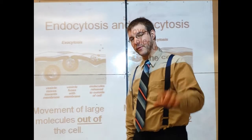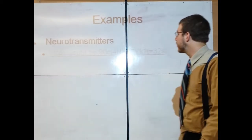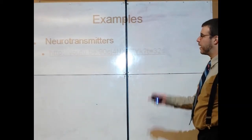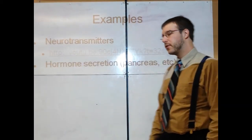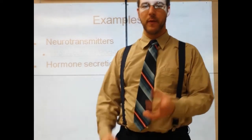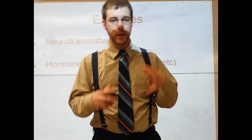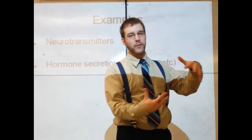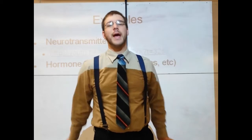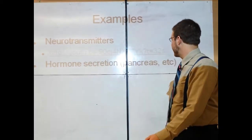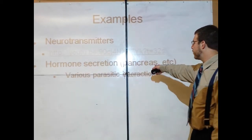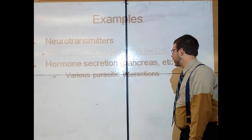As you guessed, this requires a preposterous amount of energy. Some examples include neurotransmitters — thinking occurs this way. Hormone secretion is another example: they're made on the rough ER, sent over to the Golgi, packed in vesicles, and sent out into the extracellular space and then the bloodstream — for example, from the pancreas.